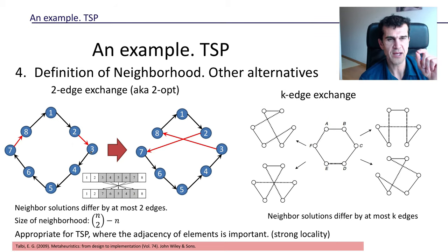The two-edge exchange is not good for permutation scheduling problems because it doesn't preserve relative order well. In terms of the solution representation, changing two edges corresponds to a change that doesn't preserve relative order much. To conclude: when you define the neighborhood, you have to take into account the type of problem you're solving, because depending on the problem, the neighborhood definition may have strong or weak locality. We must define the neighborhood with strong locality so that neighbors have similar quality, enabling local search to work well.